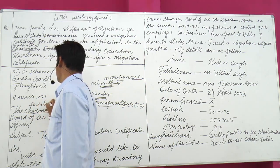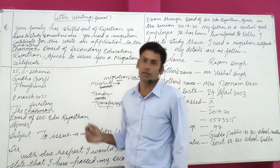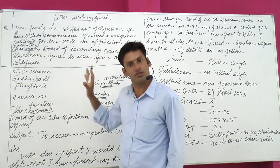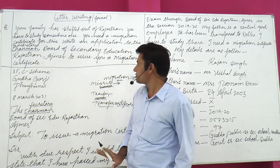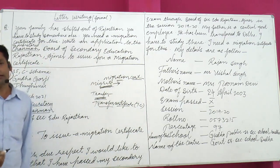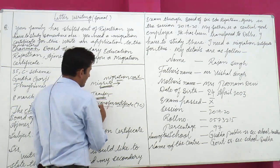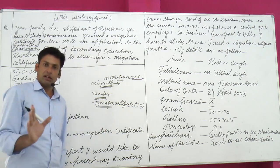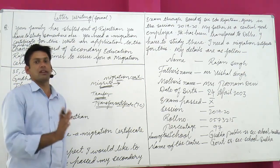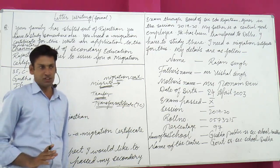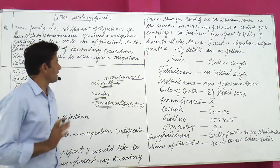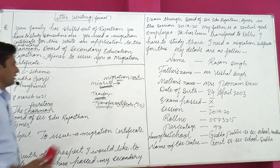Whether the question says Secretary or Chairman, write accordingly. This migration certificate letter comes in three or four types in board exams — it may be for a name correction on your mark sheet, or for obtaining a duplicate mark sheet when documents are lost, or for the migration certificate itself. Understand clearly what a migration certificate is: it is needed to study under a different state board.